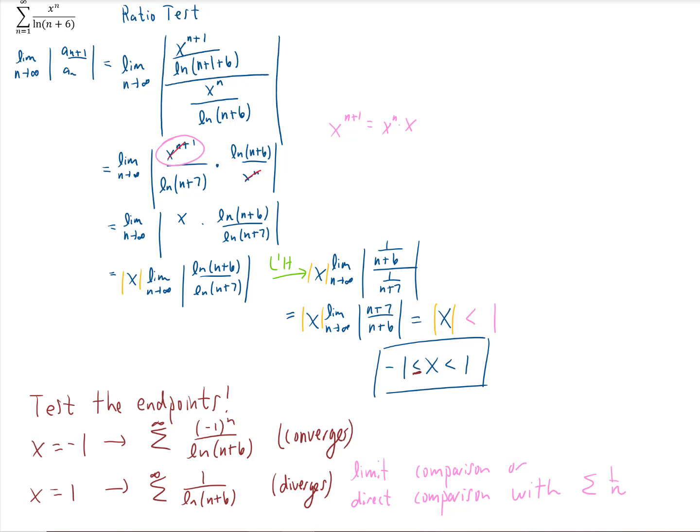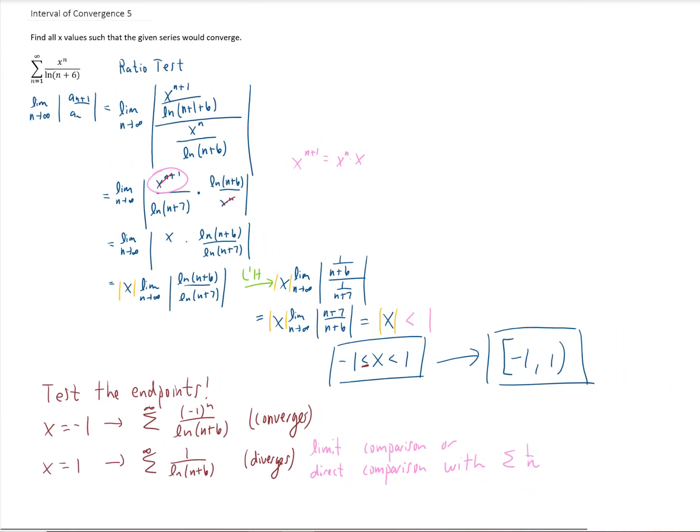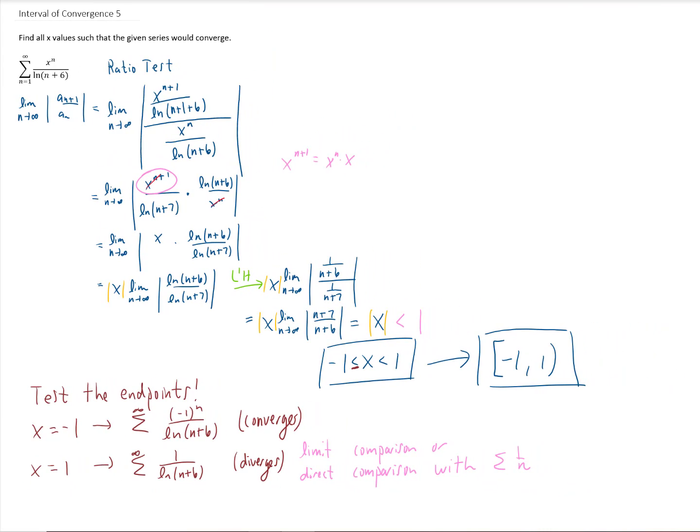And the way that we would write this in interval notation is we would say that our interval of convergence goes from negative one to one, including negative one, but not one. Okay, I hope that this video helps you out. We'll do some more practice in the next one.